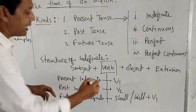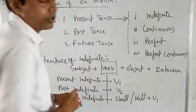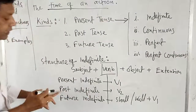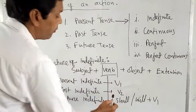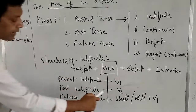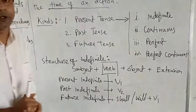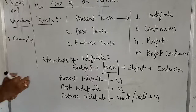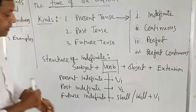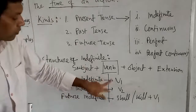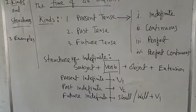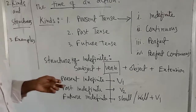I indicate the present form as V1. And in the case of past indefinite, the verb will be in past form, which I indicate as V2. Finally, for future indefinite, the verb will be used with 'shall' or 'will.' For an example, let me write the examples.